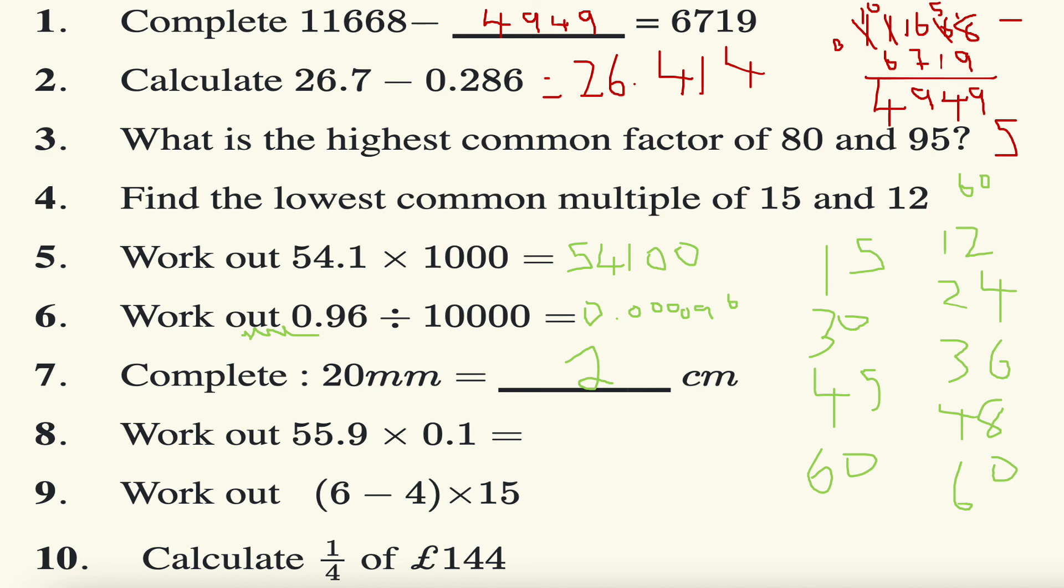Let's look at question number eight: work out 55.9 times 0.1. Now times by 0.1 is actually the same as dividing by 10, because 0.1 is same as saying one tenth. So times by a tenth is same as dividing by 10, so the answer is 5.59.